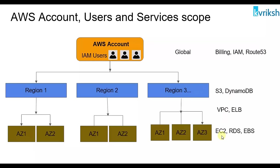Services like S3 and DynamoDB work at region level — when you create an S3 bucket, you select which region to create it in. Services like EC2, RDS databases, and Elastic Block Storage work at AZ level — one EC2 instance cannot be in two AZs at the same time. Different AWS services work at different levels: AWS account is the top-level entity, under which we have regions, and then AZs within a given region.